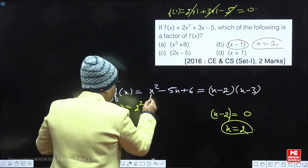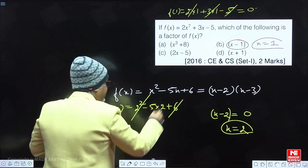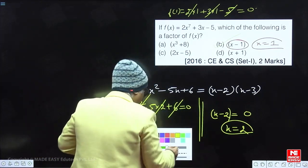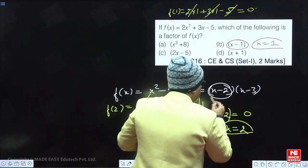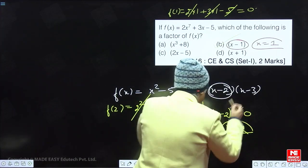f(2) will come out to be 2 square, put x equal to 2: 5 into 2 plus 6. 4, 10, and 10 gives me 0. The equation will become 0 because x minus 2 is a factor of equation. So on putting x minus 2 is equal to 0, on putting x equal to 2, the equation vanishes.